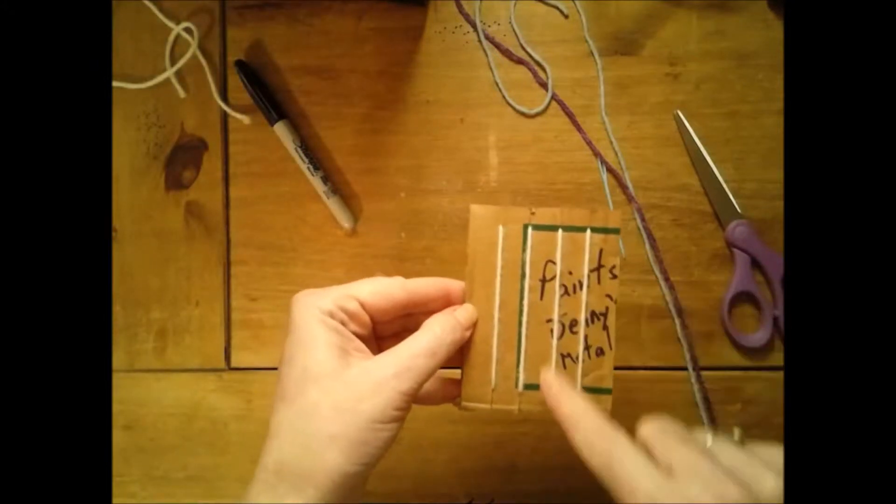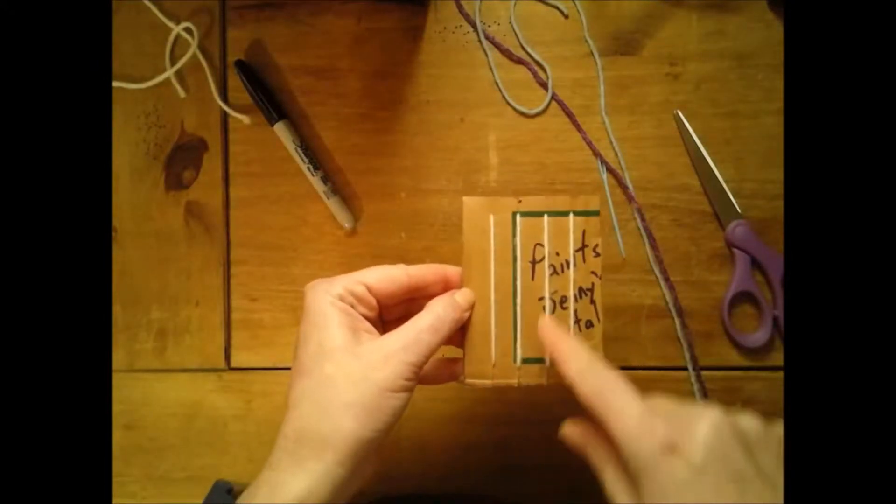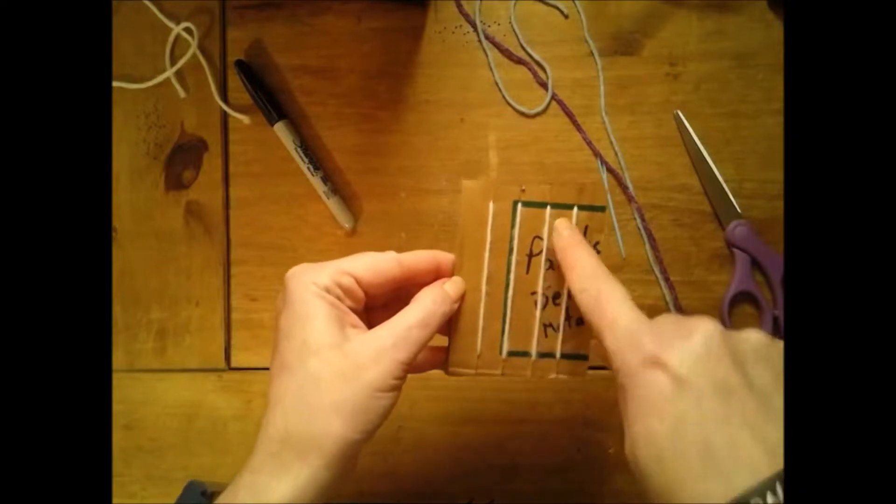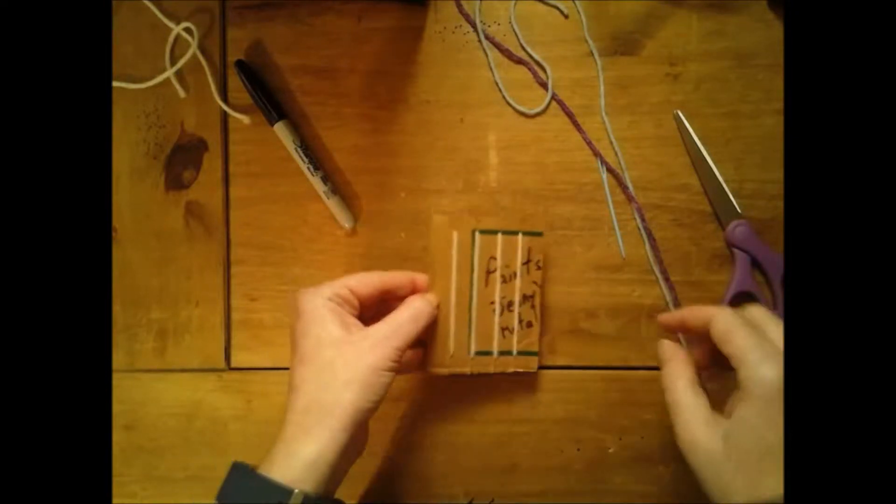I'm going to cut the extra yarn off, and then you see we have four straight warp threads, which is what these are called, so that we can weave into them.